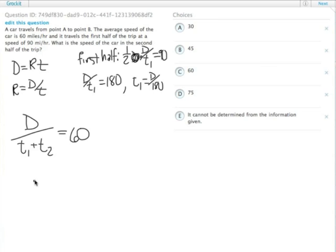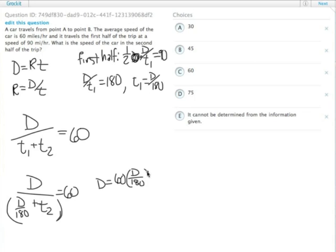We have D over D over 180 plus T2. This is total distance divided by total time equals 60. From there, we multiply both sides of the equation by this denominator. So D equals 60 times D over 180 plus T2.